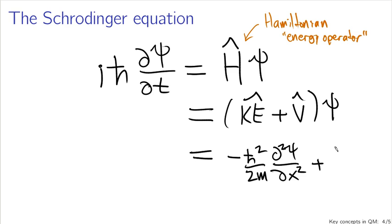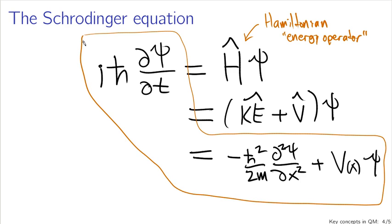Plus, and then the potential energy operator is going to look like the potential energy as a function of position, just multiplied by psi. So this is the Schrodinger equation. Typically, you'll be working with it in this form. So i h bar times the partial derivative with respect to time is related to the partial derivative with respect to space, and then multiplied by some function. The basic quantum mechanics that we're going to learn in this course mostly revolves around solving this function and interpreting the results.